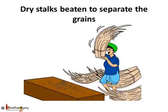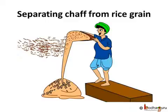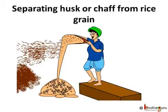Now the chaff and dust are still mixed with the grain. The mixture consists of heavier rice grains and lighter chaff and dust. By wind or by blowing air, the lighter chaff and dust can be removed. The farmer stands on a raised platform and takes the mixture of chaff and grain in a plate or flat sheet. He holds it at shoulder height and starts tilting it — the heavy grains fall right near his feet, but the lighter chaff and dust get carried away by the wind to a little distance. Separate piles of lighter chaff and heavier rice grains are thus formed.